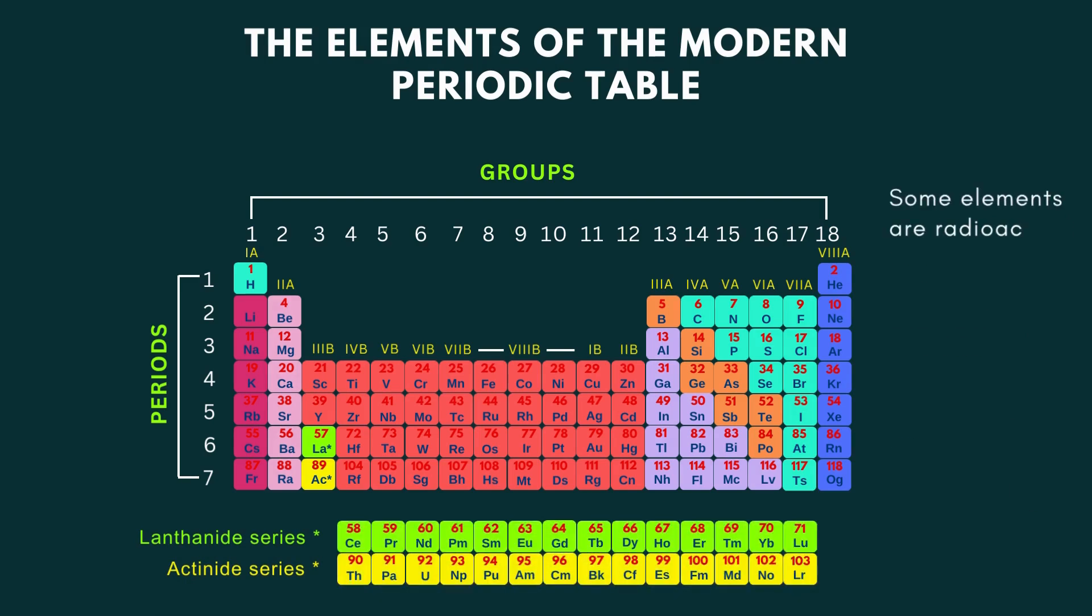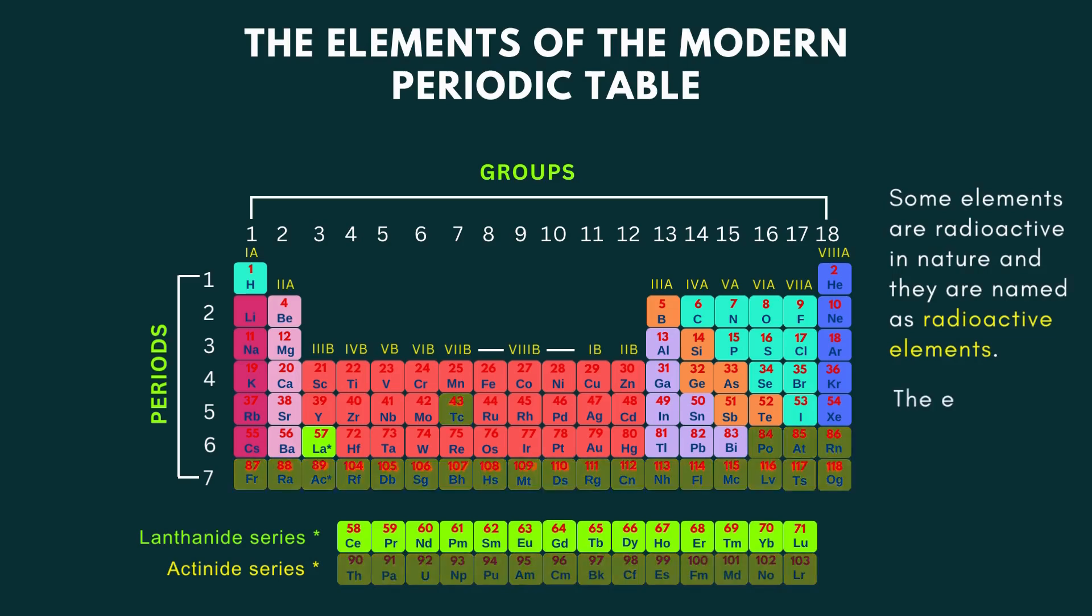Some elements are radioactive in nature and they are named as radioactive elements. The elements marked by yellow color on the periodic table here represent the radioactive elements.